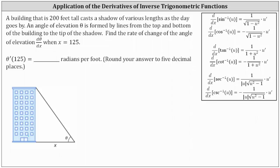So first, taking a look at our picture below, we know the building is 200 feet tall. x is the length of the shadow and theta is the angle of elevation. Notice in relation to the angle theta, the building height is the opposite side and x, the shadow length, is the adjacent side.